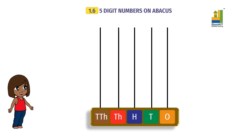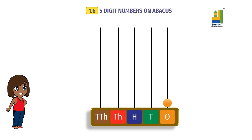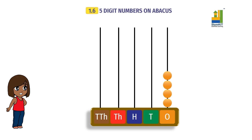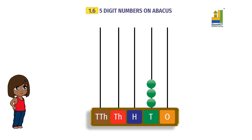Let us play with the abacus a bit. Let's start with the one spike. If we place one bead on the one spike, we have one ones, or one. Two beads means two ones, or two. Three beads means three, and four beads means four. Now let us work with the tens spike. If you place three beads on the tens spike, the number is three tens, or thirty.